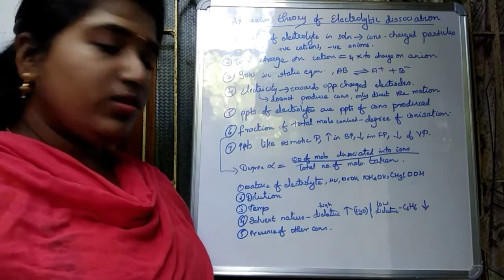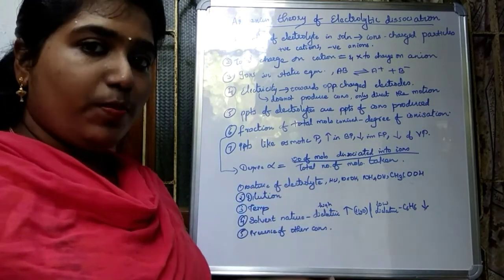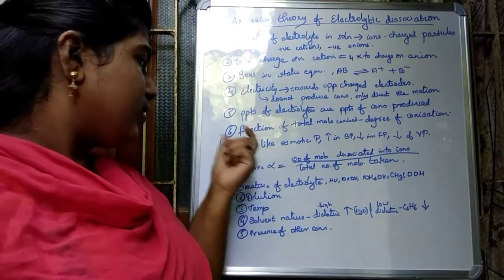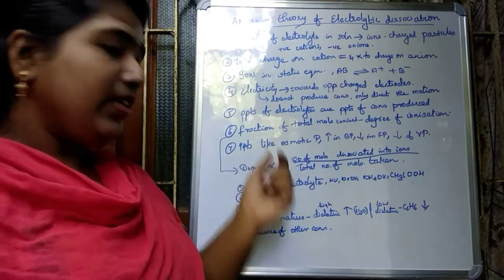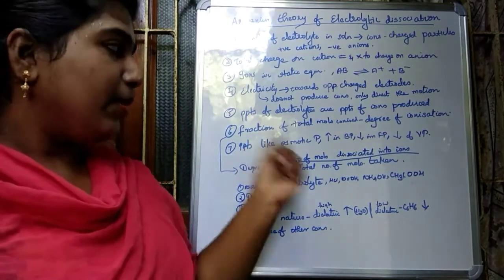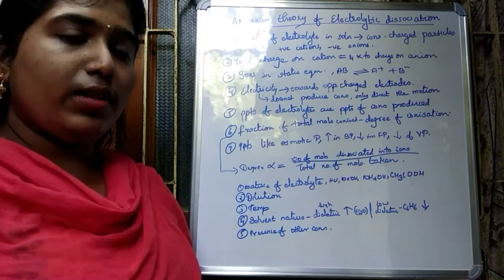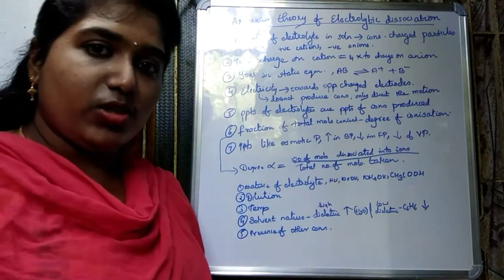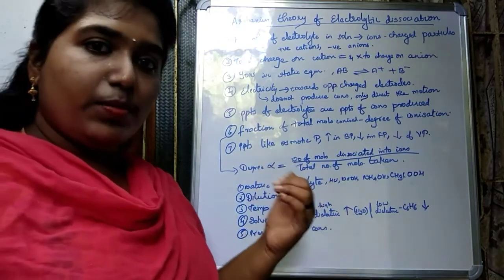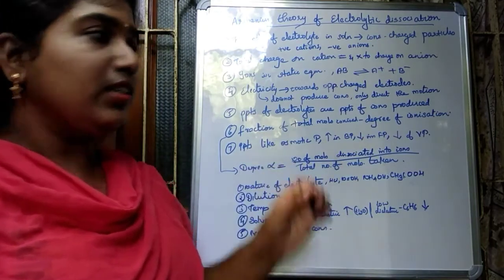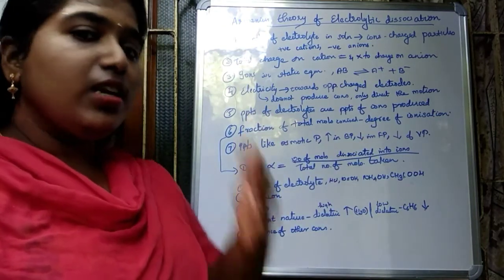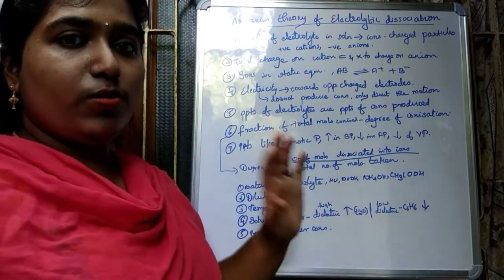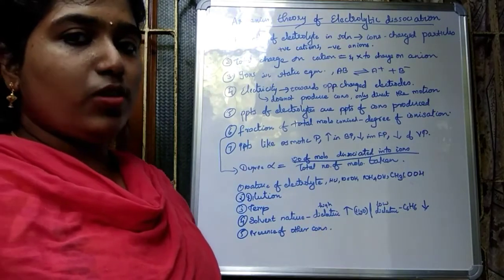The degree of dissociation depends on five factors. The seventh point: properties like osmotic pressure, depression in freezing point, elevation in boiling point, and lowering of vapor pressure are also exhibited by the electrolytes. Usually these are properties of molecules, but here the ions also exhibit these properties, causing some variations in the properties of the electrolytes.